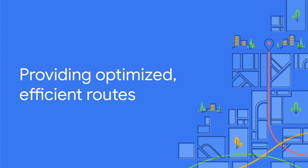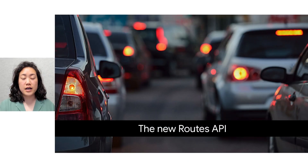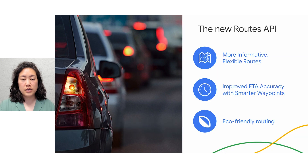Last September, we announced the preview release of the new Routes API, and at Google I/O this year, we announced its general availability. Routes API builds on the foundational features of Directions and Distance Matrix APIs that your business relies on, like comprehensive, up-to-date directions with real-time traffic, and helps with calculating distances and ETAs for origin and destination points, including larger matrix combinations. It also offers new advanced features for more informative, flexible routes and improved ETA accuracy, including two-wheel routes for motorized vehicles, tolls data, real-time traffic information along each segment of a route, eco-friendly routing, and more.